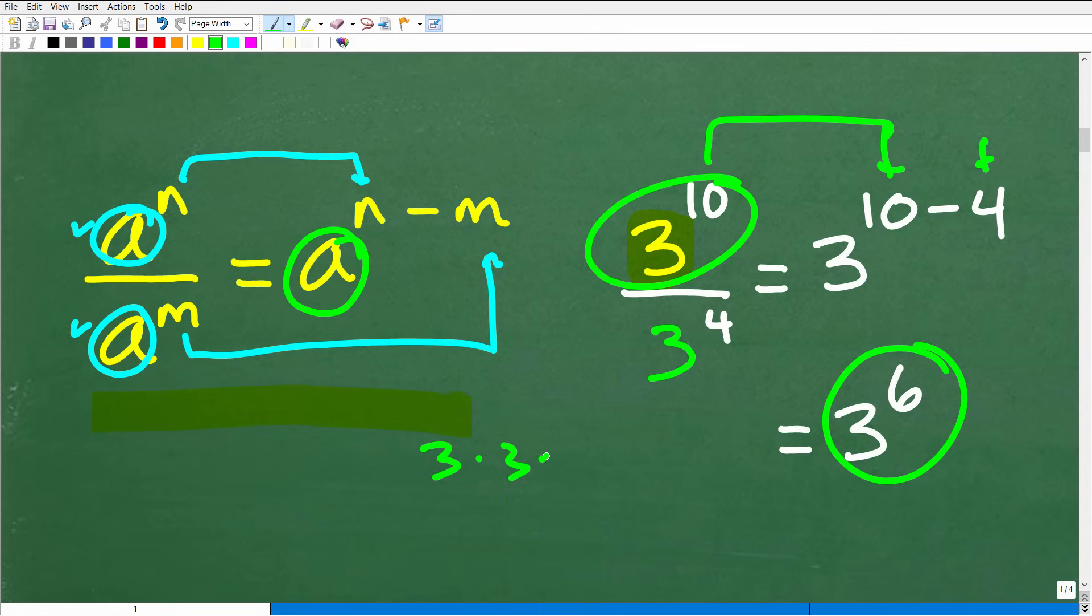And this makes sense because three to the 10th means three times itself 10 times. I've got a bunch of threes up here in the numerator and I'm divided by three to the fourth, which is four threes down here multiplied by itself. Three times four is one, two, three, four threes we multiply. I can cross cancel these threes with four threes up in the numerator and I'm left with still six threes, which of course is three to the sixth power. So the rule makes sense.